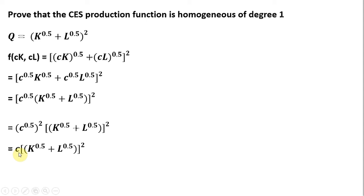So this production function is homogeneous. We can completely factor out the C term. And since C is raised to the power of 1, the exponent on C is 1, it is homogeneous of degree 1.